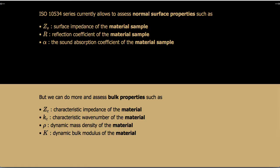Currently, this ISO series allows assessment of normal surface properties such as the surface impedance of a material sample. This means you need to make another measurement for a different sample thickness. The reflection coefficient and sound absorption coefficient are likewise obtained for normal incidence plane waves, but each requires a separate measurement if you change the sample thickness.